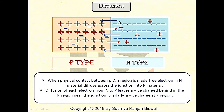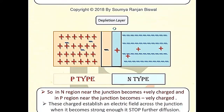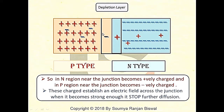The free electrons in the N-material diffuse across the junction into the P-material. Diffusion of each electron from N to P leaves a positive charge behind in the N-region near the junction. Similarly, diffusion of each hole at the N-region leaves a negative charge behind in the P-region.